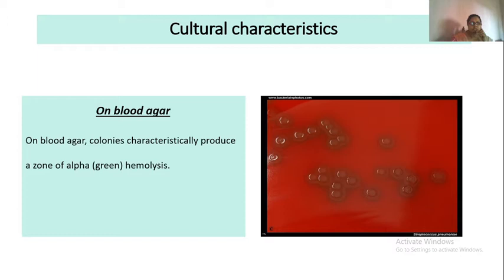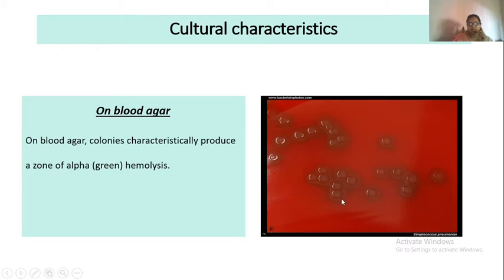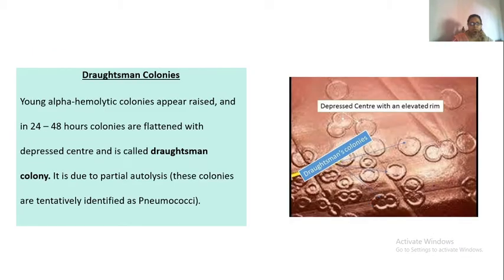Coming to the cultural characteristics: because this is a very fastidious organism, all media discussed will be enriched medium, as they cannot grow on basic medium. On blood agar, as you can see in this picture, the colonies of Streptococcus pneumoniae do not give a complete clear lysis — they give a partial lysis, which is alpha hemolysis. So on blood agar they produce a zone of alpha hemolysis.